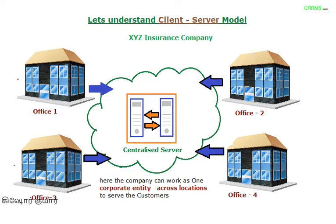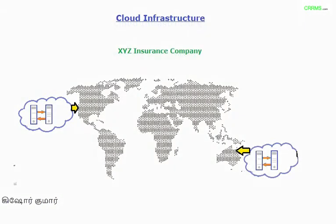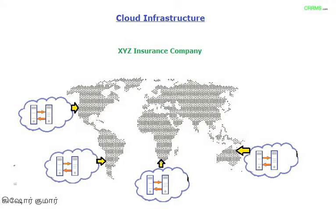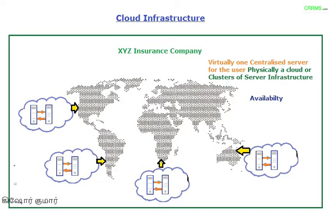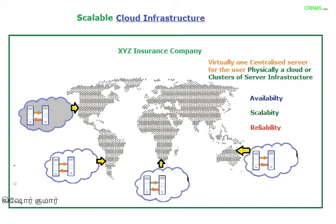In a cloud infrastructure, you can strategically place clusters of servers across locations wherever needed, with data centers distributed geographically. This is virtually one centralized server for the user, but physically a cloud or cluster of server infrastructure, ensuring availability, scalability, and reliability.